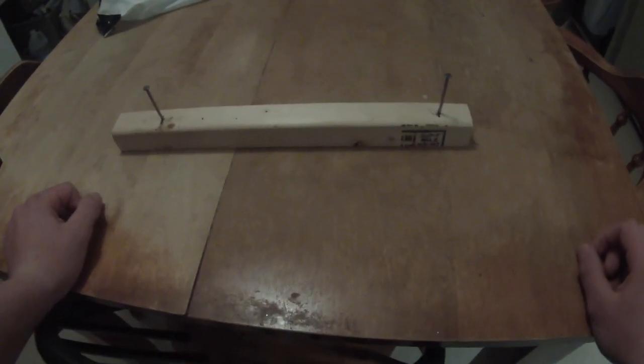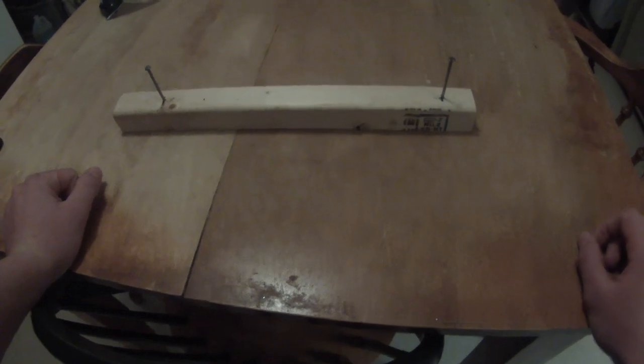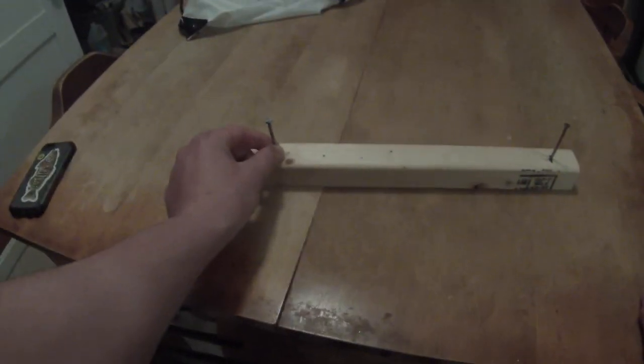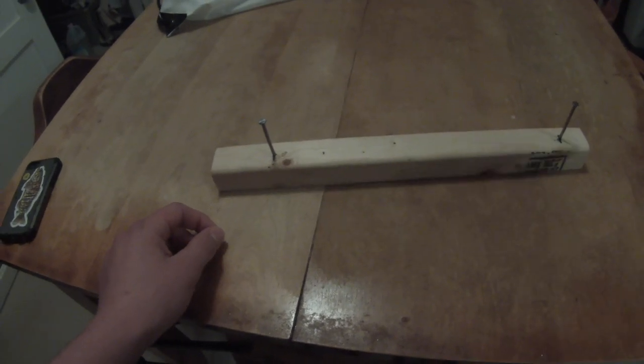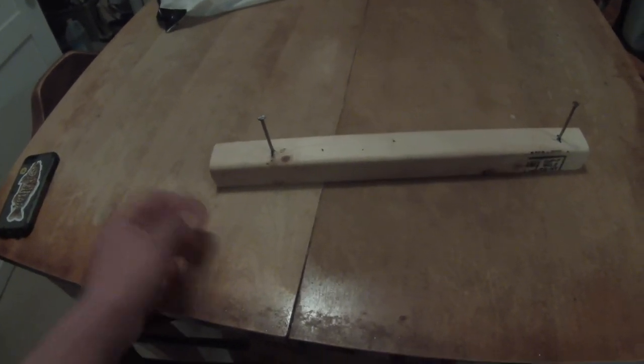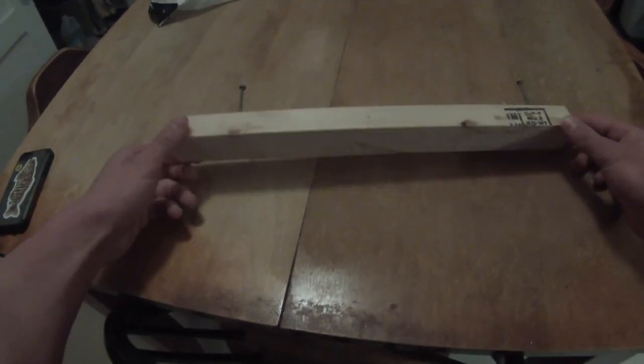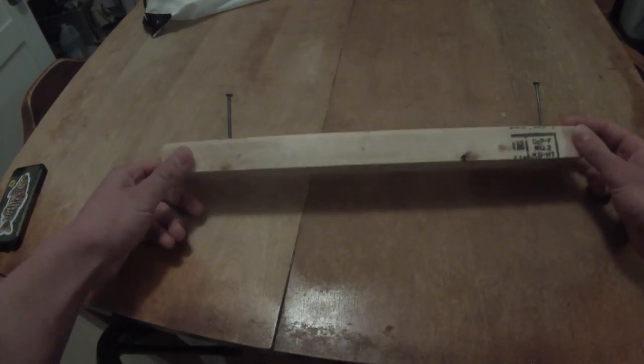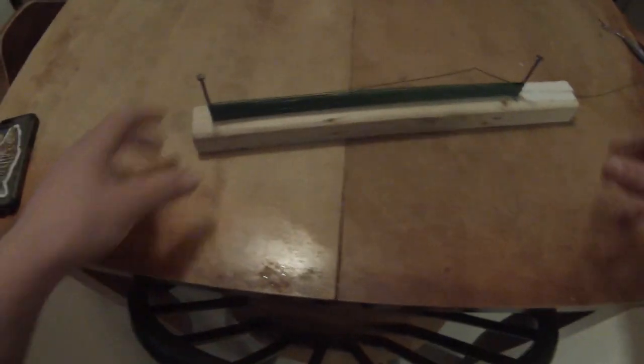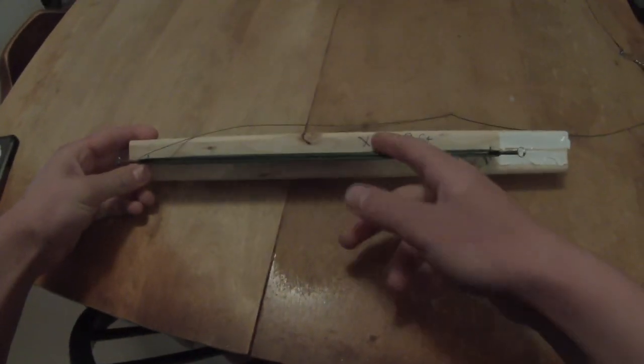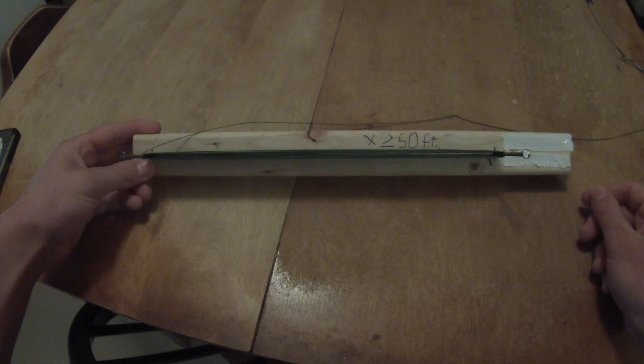So the next thing you want to do is just take 40 pound tip-up line and just tie it on with whatever knot you want and just wrap it around. Every wrap will be a foot of line, so it's your preference, whatever depth you want to be able to set it to. Right here I've spooled this with a little bit greater than 50 feet of line.